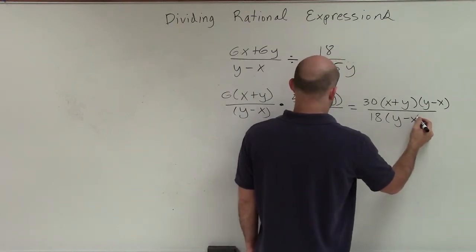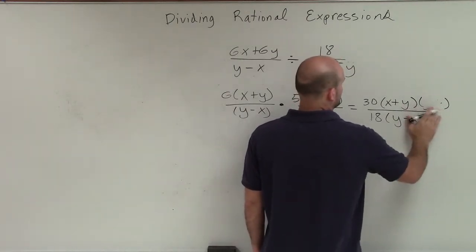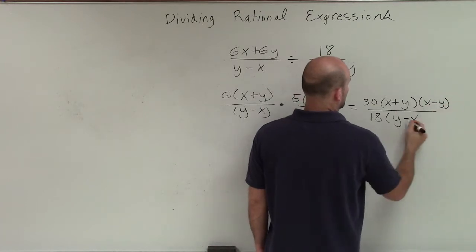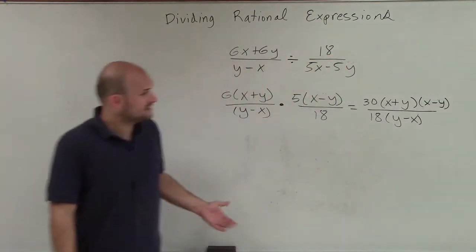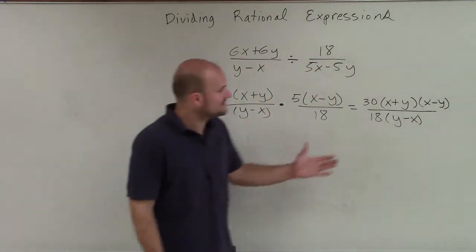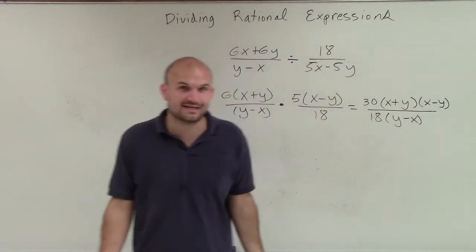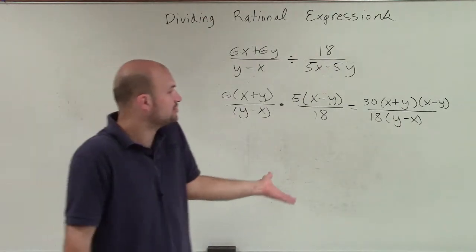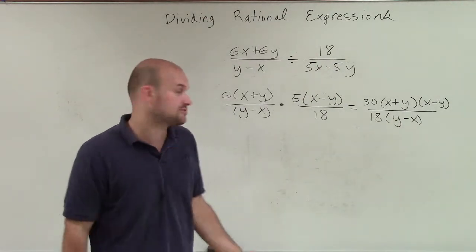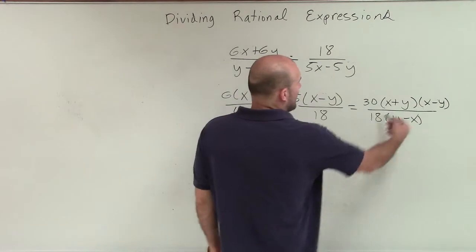No, (x - y), sorry, and then (y - x). So I look at this, and you say, well, neither of these, I don't have anything that I can simplify. I can reduce the 30 over 18, right? I could say, what do those both have in common? You could say, well, they can both be divided by 6, all right, which will reduce down to 5 thirds. However, none of these are exactly the same.